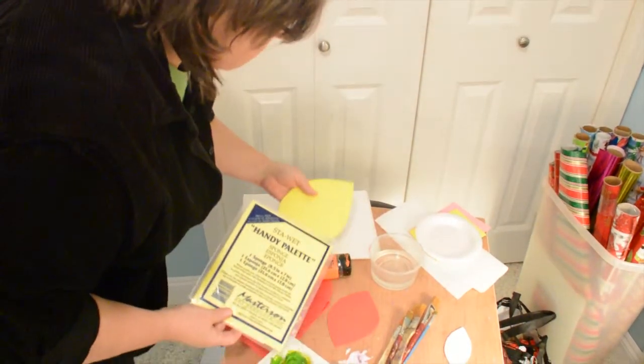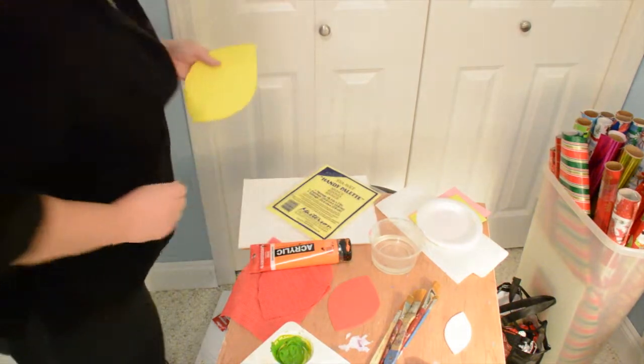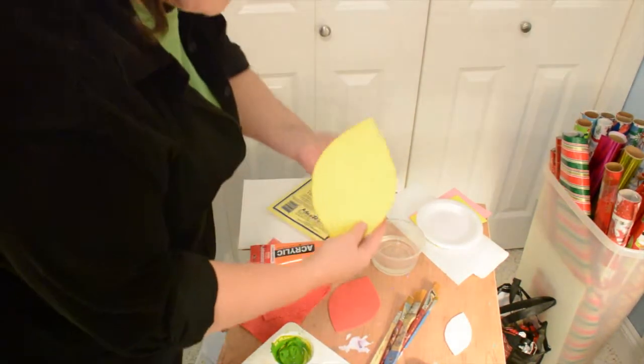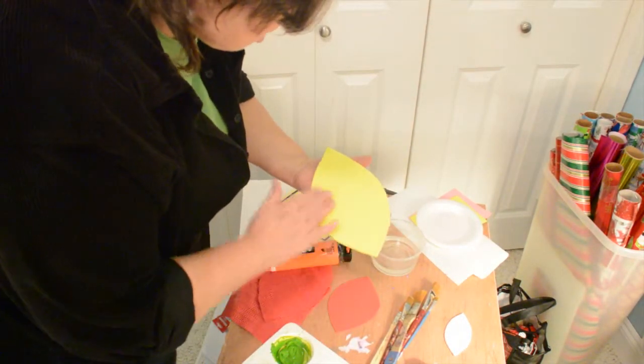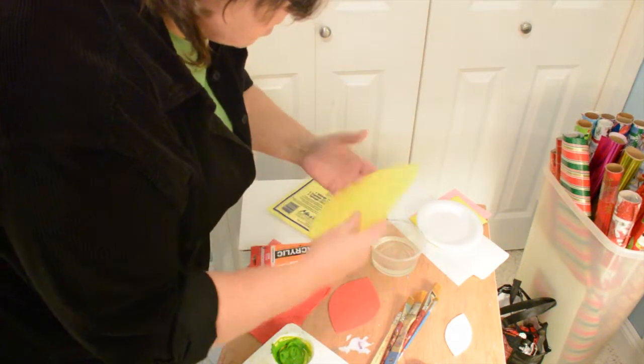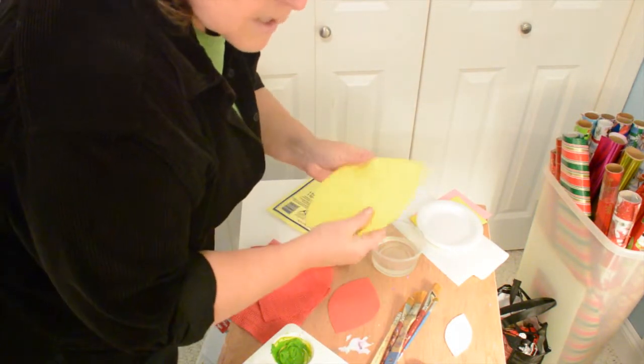You could use this, this is a little bit more expensive. This is actually a sponge and it's used for acrylic painting. You can get that from pretty much any acrylic section in paint shops. The reason I like it is because it actually has this texture and that's pretty fun, but you could use either side of it.